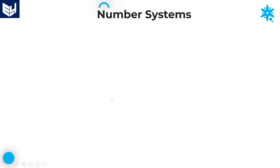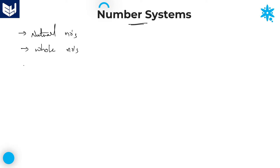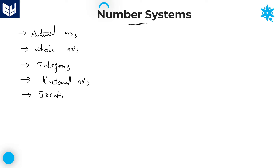Welcome to the session. In this session I will continue the definitions of number systems. In the last session I already explained a few definitions — we discussed about natural numbers, whole numbers, integers, rational numbers, and irrational numbers. These five definitions are completed in the last session.